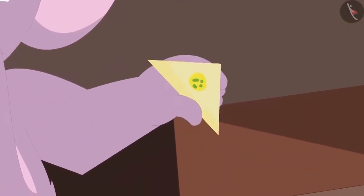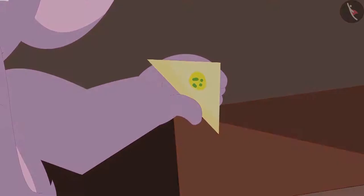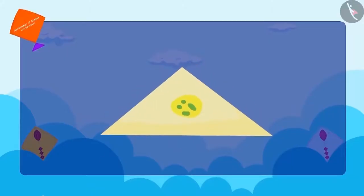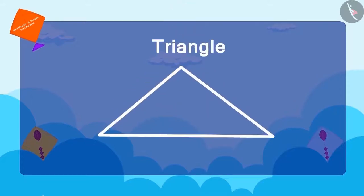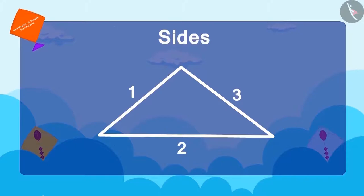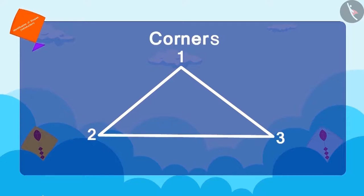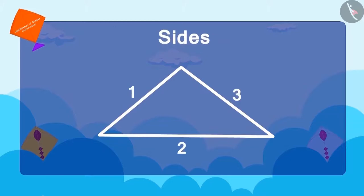Now Appu showed Chanda a barfi. Children, what shape is this? This is a triangle. How many sides are there? Three. And how many corners? Three. A triangle has three sides and three corners.